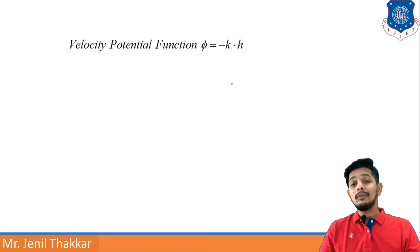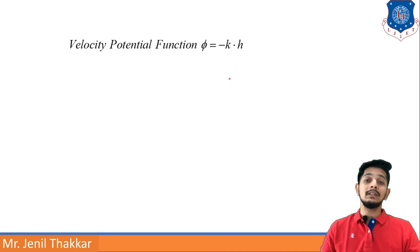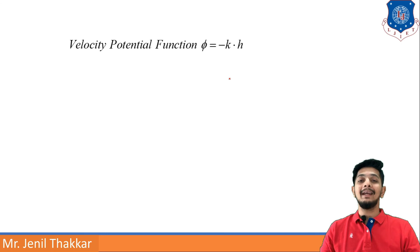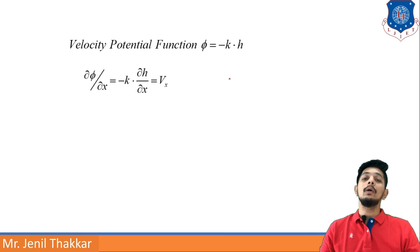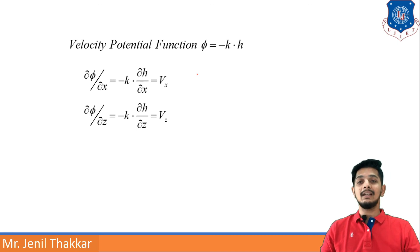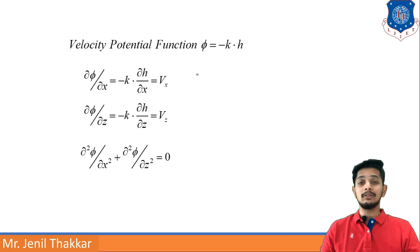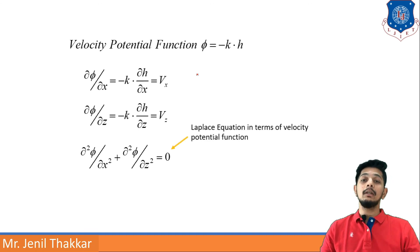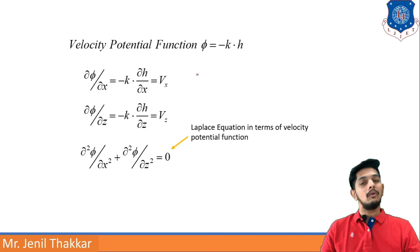If we write the Laplace equation in terms of the velocity potential function φ, where φ = −K·H, then ∂φ/∂x = −K·(∂H/∂x) = Vx and ∂φ/∂z = −K·(∂H/∂z) = Vz. Therefore: ∂²φ/∂x² + ∂²φ/∂z² = 0. This is the Laplace equation for 2D flow in terms of the velocity potential function.